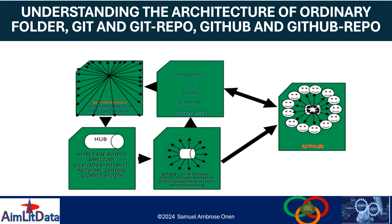We have also seen the architecture — I call this the architecture of the ordinary folder, Git repo, GitHub, and GitHub repository. This architecture is designed to create a mental picture in the back of our mind so that we can understand it well. This area here — where I'm moving the cursor — represents the folder in our local machine, which can exist without or with Git.